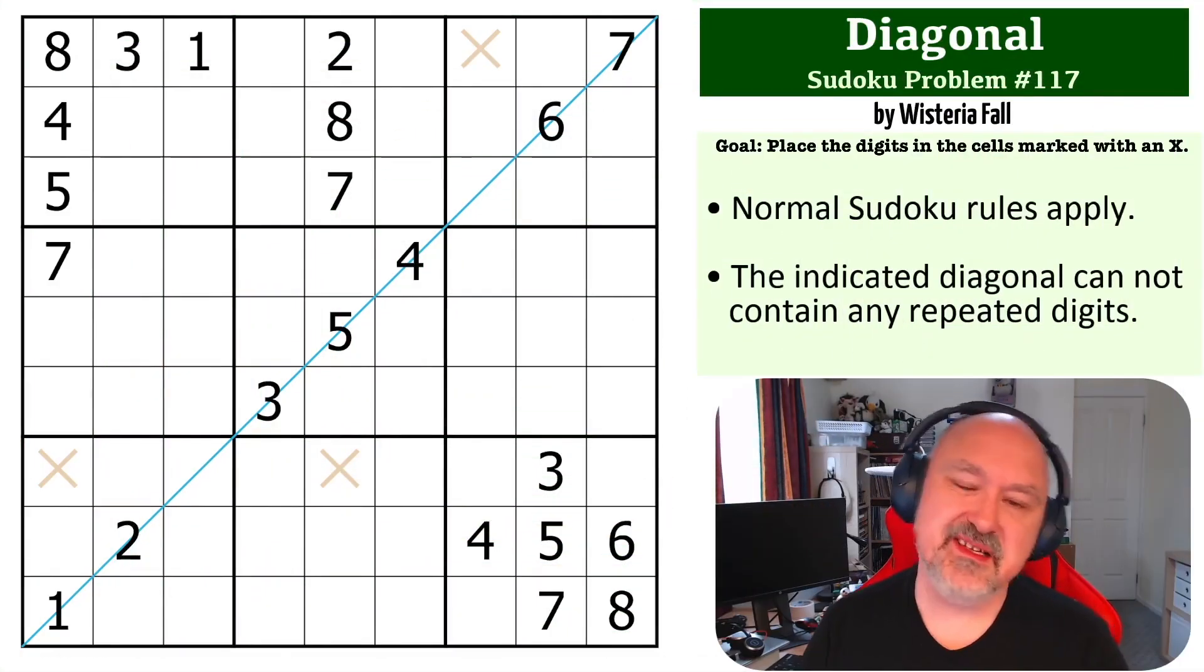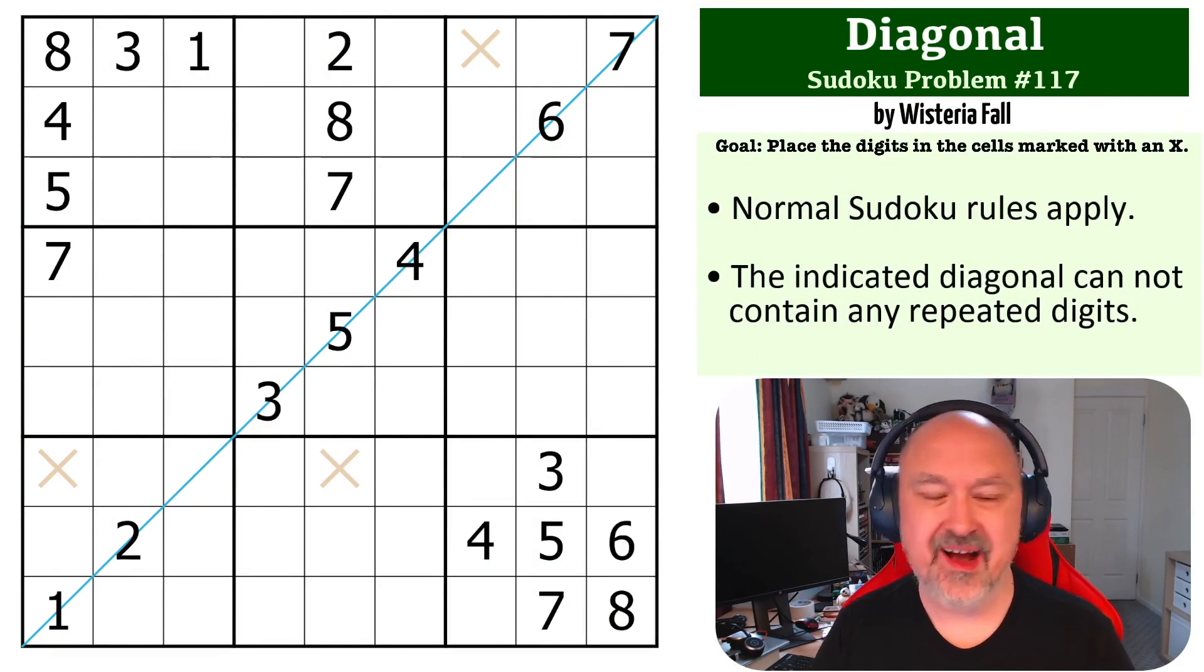Hey everyone, this is Bremster, and this is number 117 in the Sudoku Problems series. This is a diagonal Sudoku submitted by WisteriaFall, and thank you for sending it through.